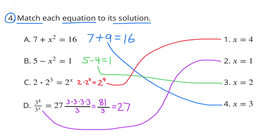Number 4: Match each equation to its solution. Part a: 7 plus x squared equals 16. Looking at solution 4 where x equals 3, substituting gives 7 plus 3 squared equals 16. Since 3 squared is 9, and 7 plus 9 equals 16, solution 4 — x equals 3 — matches this equation.